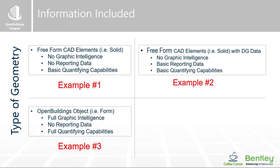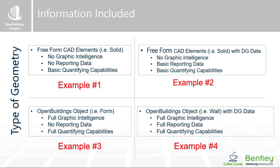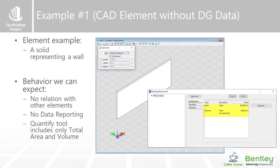Thirdly, there is using what we might call a native Open Buildings object — a door, a wall, a beam, a column — where we get the full benefit of the link. We also have generic form modeling in Open Buildings Designer, which is slightly different from example one because we do get some graphical intelligence and some quantification capabilities. And lastly, example four is where we're using those full native object definitions with walls, doors, and beams.